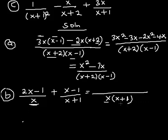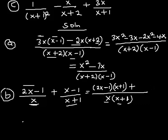Dividing x(x+1) by x, I'm left with (x + 1), and I use that to multiply the numerator (2x − 1), giving (2x − 1)(x + 1). I bring down the plus sign. Then dividing x(x+1) by (x+1), that cancels, and I'm left with x. I multiply x by the numerator (x − 1), giving x(x − 1).